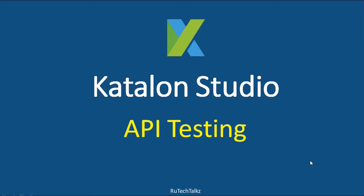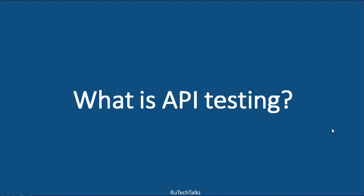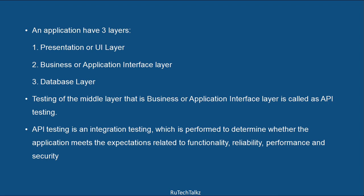In this tutorial we are going to learn about the basics of API testing. An application has three layers: the presentation or UI layer, the business or application interface layer, and the database layer. The application interface layer is the API layer, and testing of this middle layer is called API testing. API testing is an integration testing performed to determine whether the application meets expectations related to functionality, reliability, performance, and security.